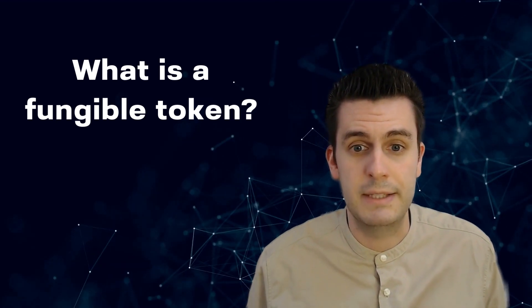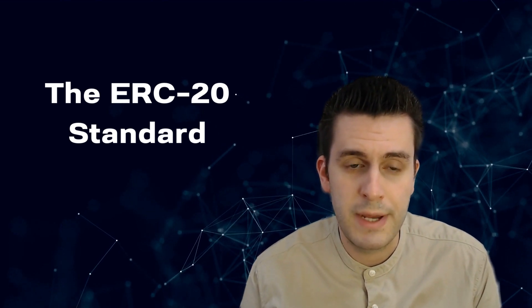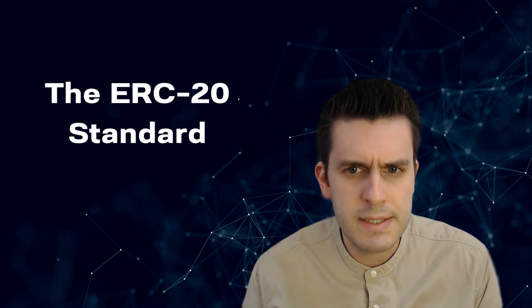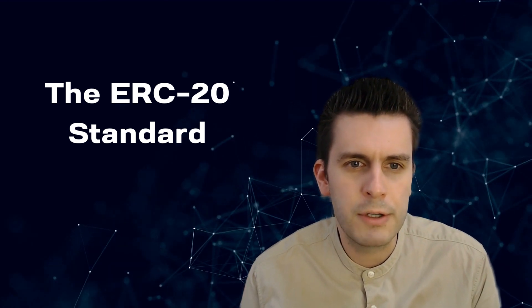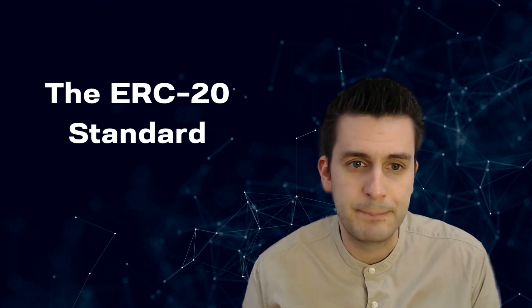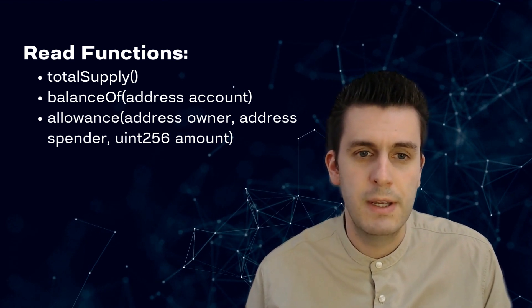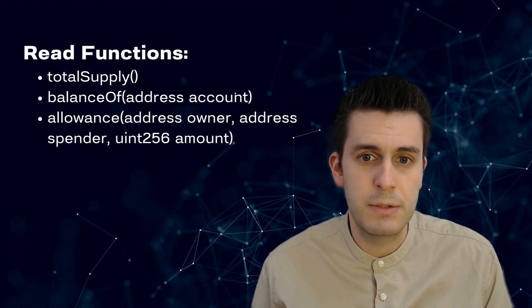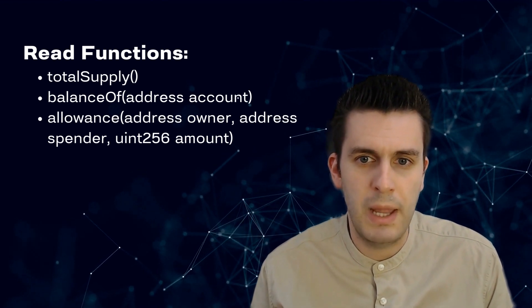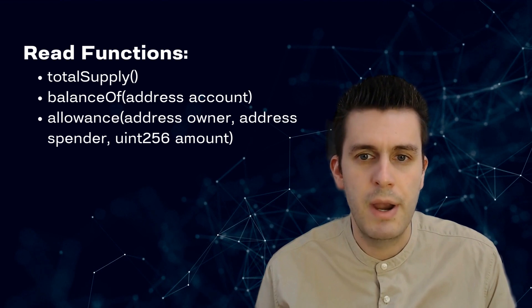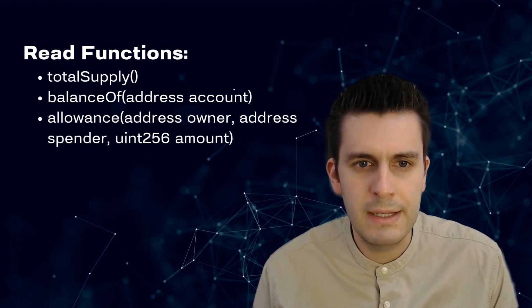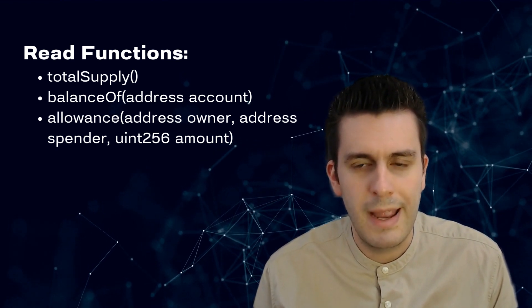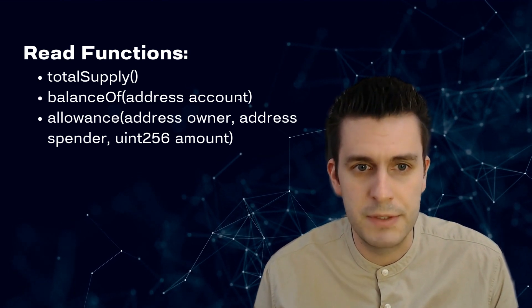When we use Ethereum smart contracts, we use the standard called ERC20 to create fungible tokens. It is a standard interface which each smart contract needs to implement in order to be ERC20 compliant. The read functions include total supply, which returns how many tokens exist, and balance of, which takes a user address and returns the token balance of that account.